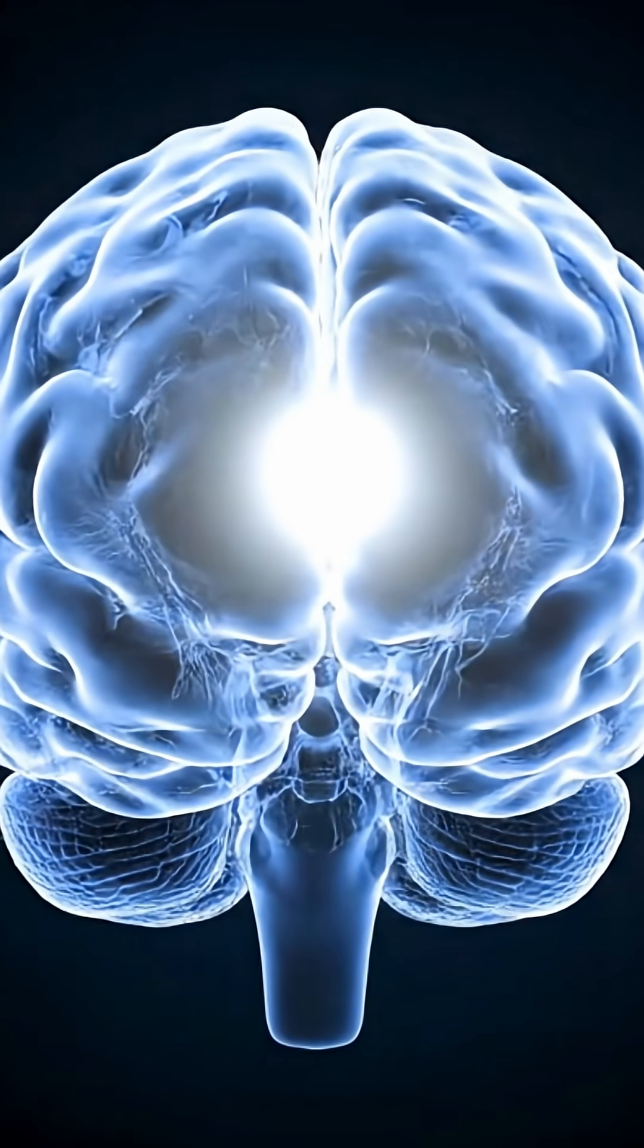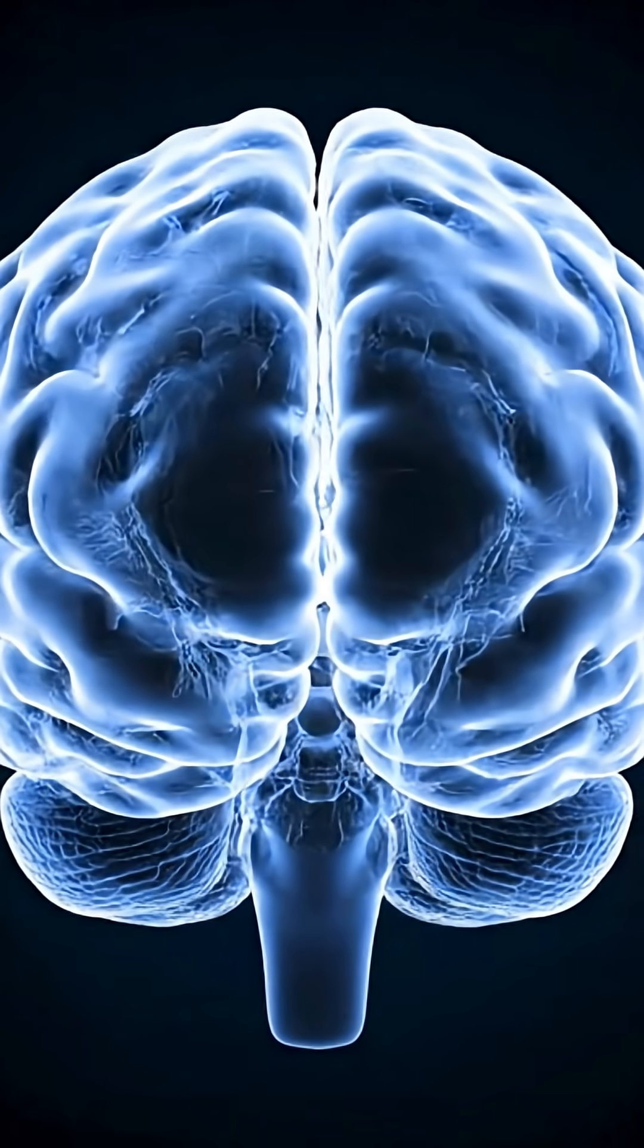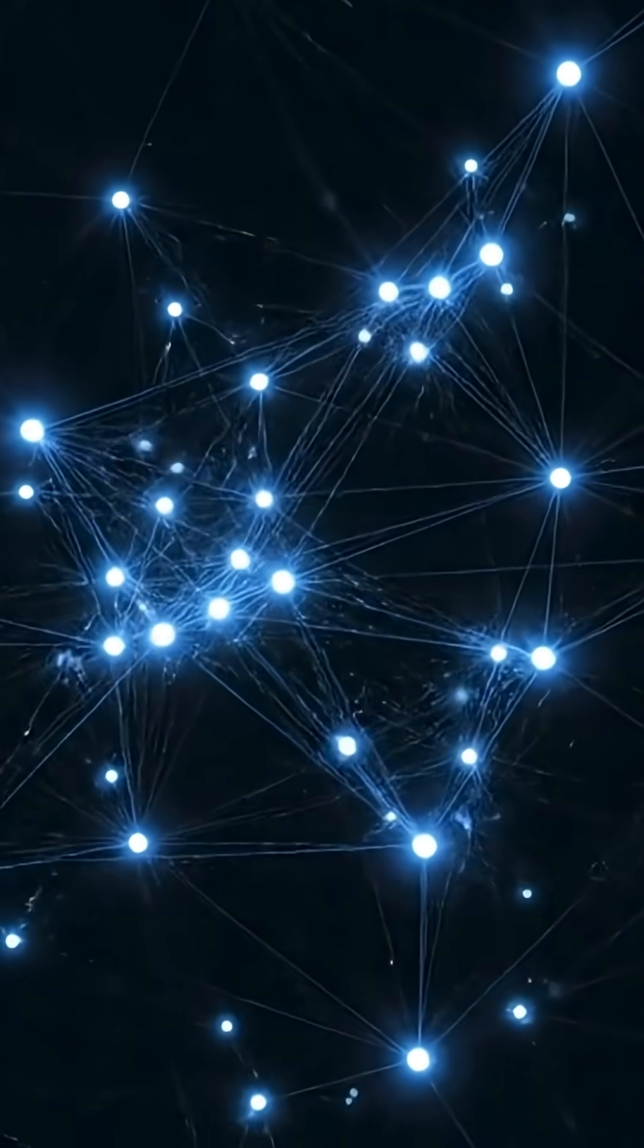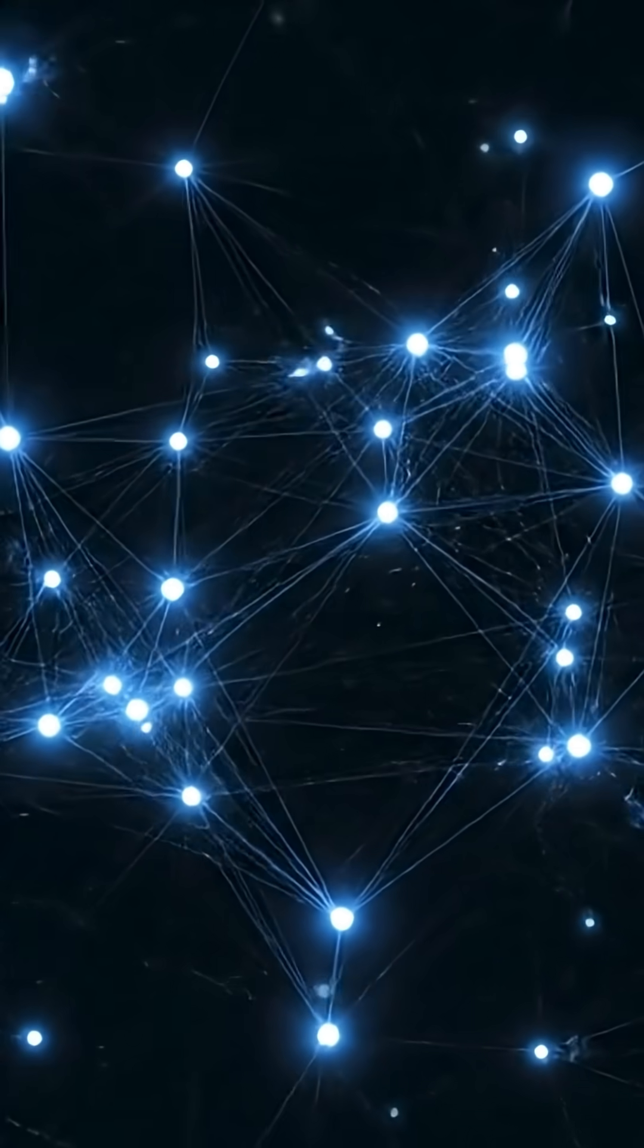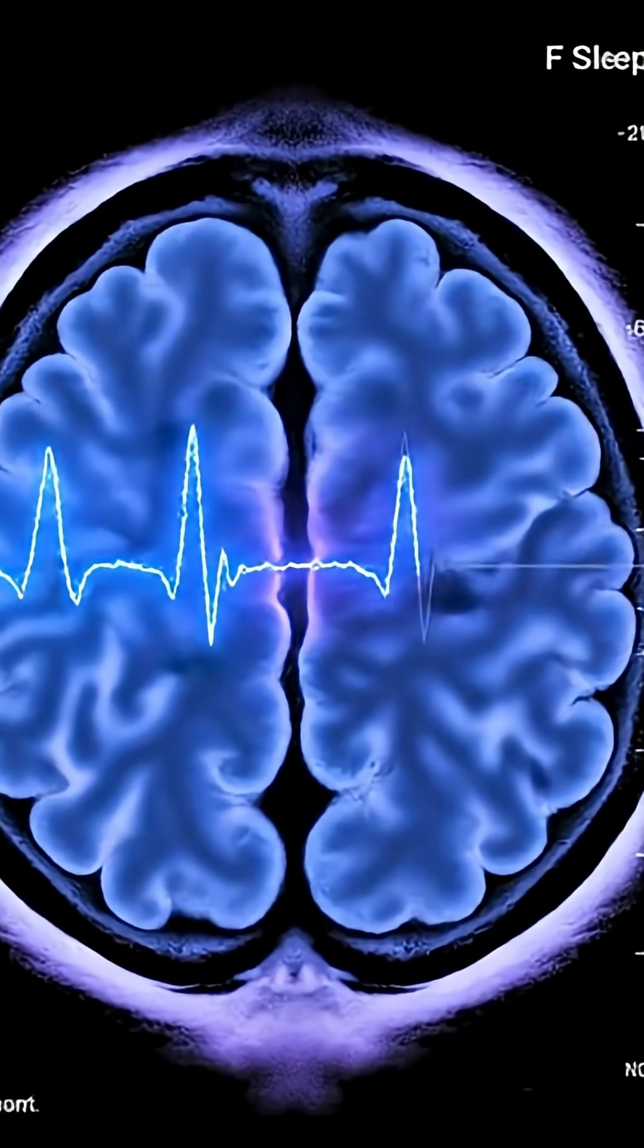When it happens, critical regions like the prefrontal cortex, responsible for focus, decision-making, and self-control literally go offline. It's as if tiny communication bridges collapse inside your brain. The circuits that keep you conscious begin to fragment.